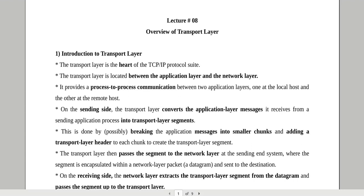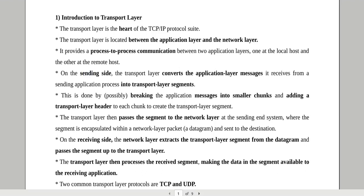Now joh aapke paas transport layer hai, yeh sending side pe kya karta hai? On the sending side, joh aapke paas transport layer hai, it will convert the application layer messages it receives from the sending application process into a transport layer segment. Aapko pata hoga ke data ko different layers pe hum different naam dete hai — so at the transport layer it is called a segment if we are talking about the TCP protocol specifically. Toh transport layer ki location kahan pe hai — it is in between the application layer and the network layer. Toh sending side pe yeh kya karega: it will receive data from the sending application process, aur phir us application message jo ki yeh receive karta hai, usko yeh convert karega into a transport layer segment.